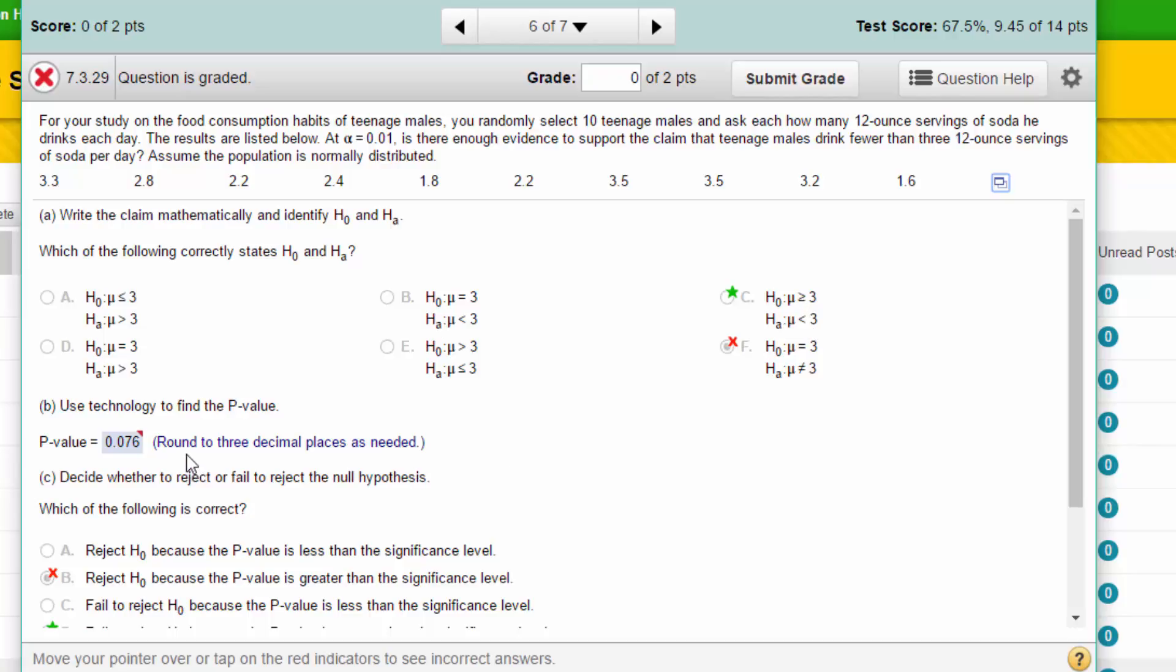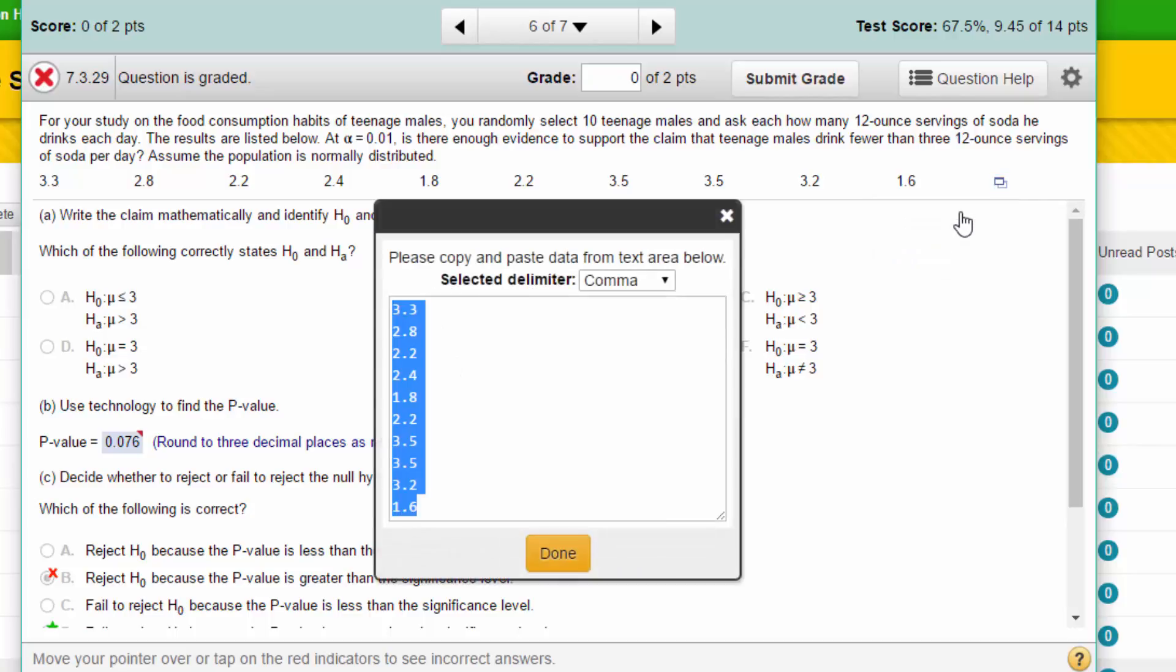They tell us to use technology to find the p-value, and I'm always an advocate of using technology. In this case, we've got a table of numbers, so we've got raw data. If we click on the little icon there, unfortunately StatCrunch doesn't open. You can open it in Excel if you want. I'm going to copy it to the clipboard. I'm going to put my cursor in that highlighted area and click copy to make sure I've copied that data.